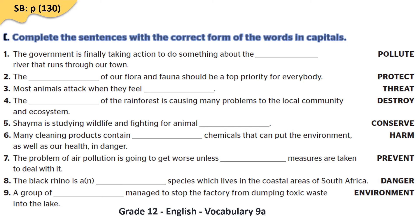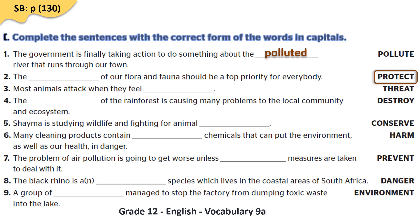Sentence one: the government is finally taking action about the polluted river that runs through our town — we need an adjective before the word river, so we use polluted. Sentence two: the protection of our flora and fauna should be a top priority for everybody — we need a noun because of the article the before the blank and of after it, so the answer is protection.